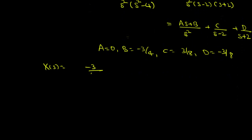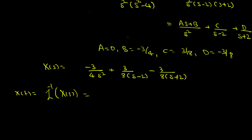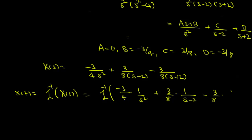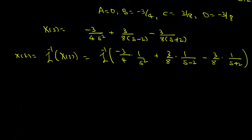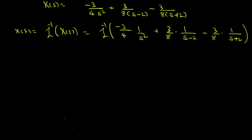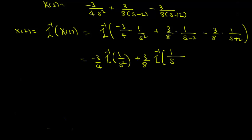Therefore, X of s equals minus 3 over 4 times 1 over s squared plus 3 over 8 times 1 over (s minus 2) minus 3 over 8 times 1 over (s plus 2). So x of t is the Laplace inverse of X of s, which equals the Laplace inverse of minus 3 over 4 times 1 over s squared plus 3 over 8 times 1 over (s minus 2) minus 3 over 8 times 1 over (s plus 2). Since the Laplace inverse is linear, this becomes minus 3 over 4 times the Laplace inverse of 1 over s squared plus 3 over 8 times the Laplace inverse of 1 over (s minus 2) minus 3 over 8 times the Laplace inverse of 1 over (s plus 2).